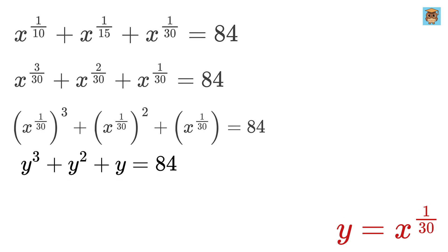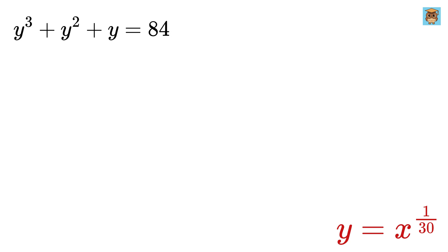This is a cubic equation and now we need to solve for y. Notice that 84 can be written as 64 plus 16 plus 4. This is useful because 64 is 4 raised to 3, 16 is 4 raised to 2, and 4 is just 4. This suggests that 4 might be a root of our equation. Now take all of them to the left hand side of the equation.